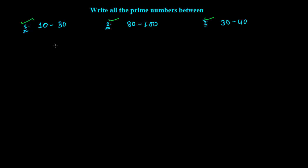When the question gives you two limits — a lower limit and an upper limit — you need to find all the prime numbers between those two numbers, like 10 to 30. First, you need to write all the numbers between those given numbers.